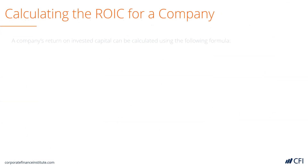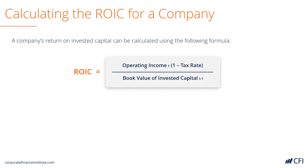Return on invested capital can be calculated using the following formula: operating income at time t, times 1 minus the tax rate, divided by the book value of invested capital at time t minus 1. The numerator of the formula is the exact same thing as net operating profit after tax, and it is measured at time t. Meanwhile, the denominator is measured at time t minus 1.